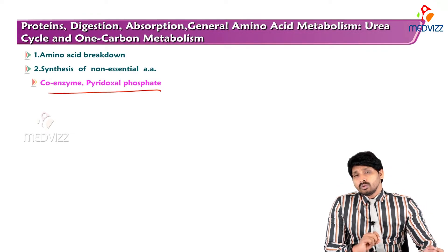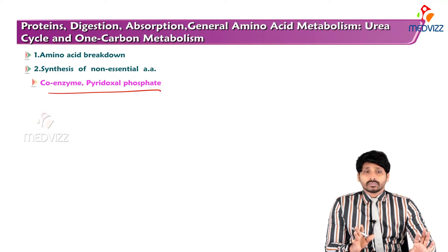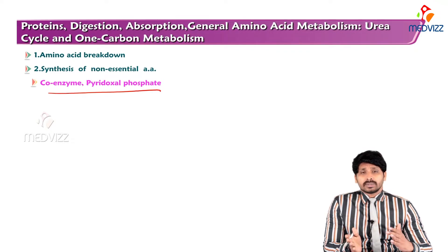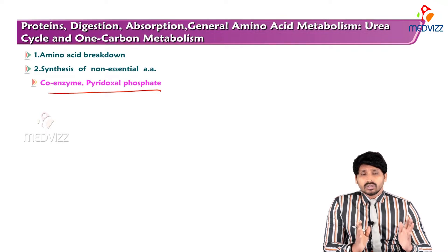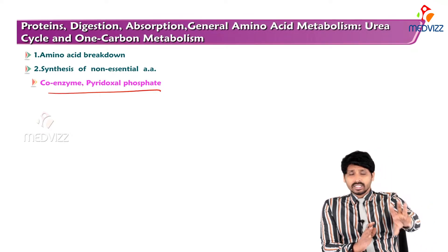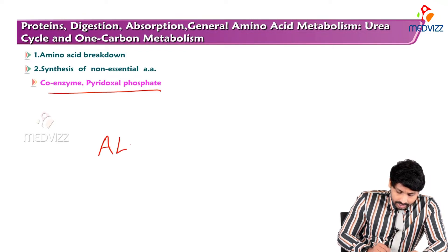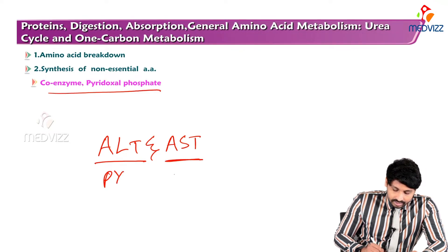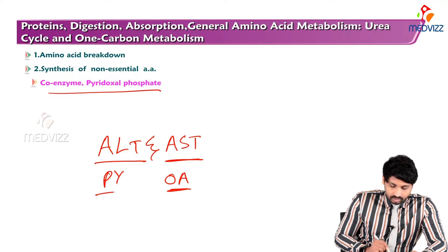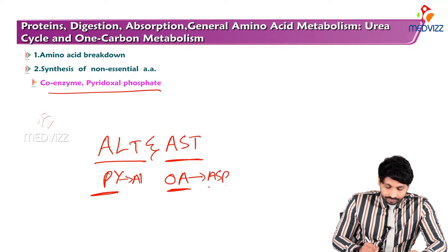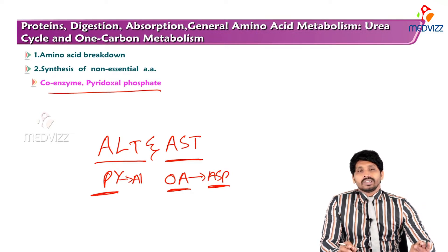Another enzyme is AST — aspartate transaminase. In place of pyruvate, here there is oxaloacetate, which is converted to aspartic acid. The amino group transfers between oxaloacetate and aspartic acid. The donor of the amino group is glutamic acid, which is constant for both AST and ALT. In ALT the ketoacid is pyruvate; in AST it is oxaloacetate. These transamination enzymes are specially present in the liver.